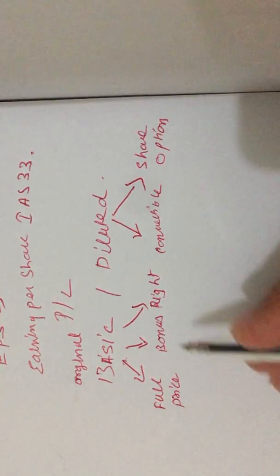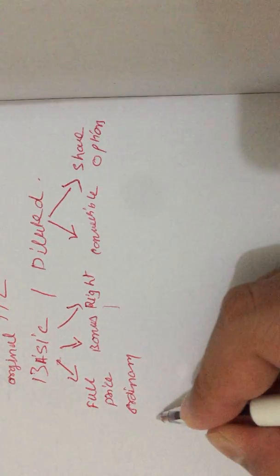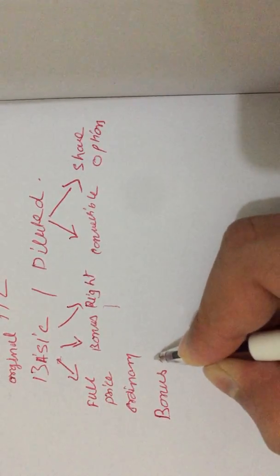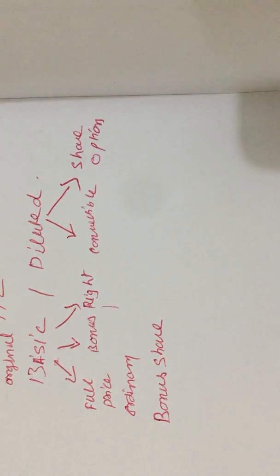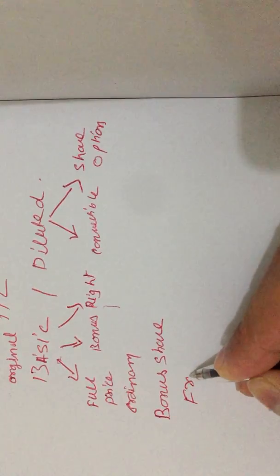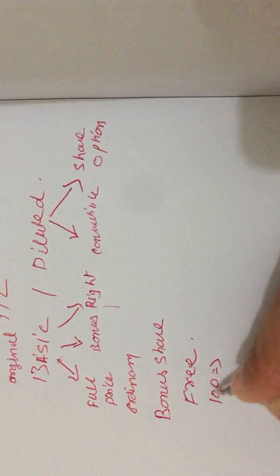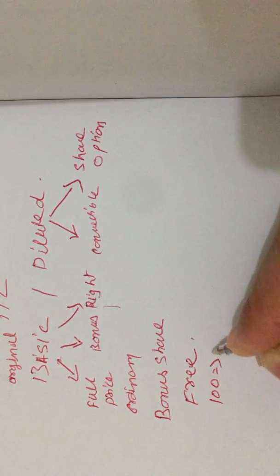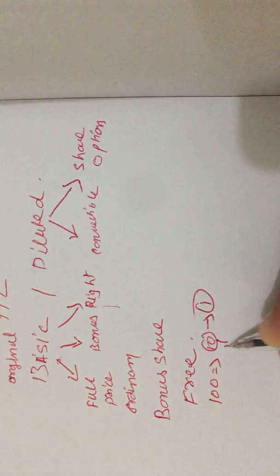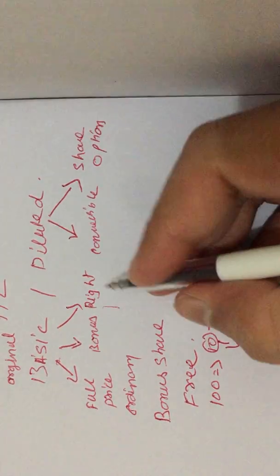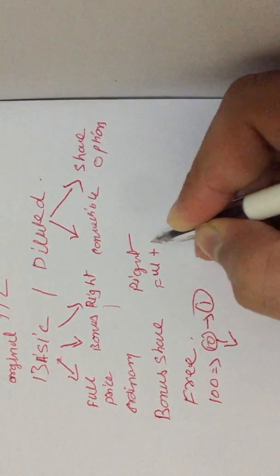Full price shares are simply ordinary shares. Now, what is a bonus share? Bonus shares are shares given for free to existing shareholders. For example, if I have 100 shares and the company says 'for every 10 shares we give one share free,' then I have 100 shares and I get 10 shares free — those are bonus shares.